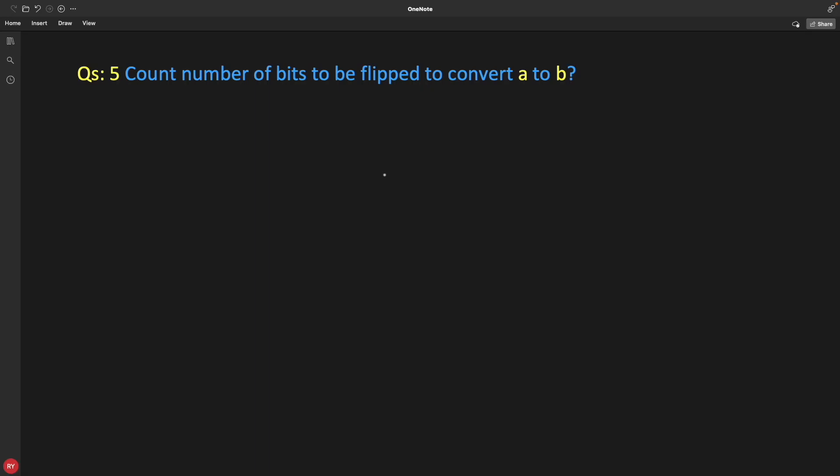Hello friends, this is Rupesh and you are watching cppnerds video series on bit manipulation interview question series. This is question number 5 and the question is: count the number of bits to be flipped to convert a to b.